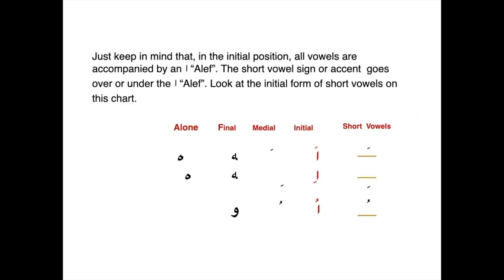Just keep in mind that in the initial position, all vowels are accompanied by an aleph. The short vowel sign or accent goes over or under the aleph. Look at the initial form of short vowels on this chart.